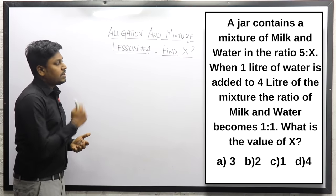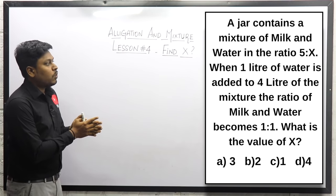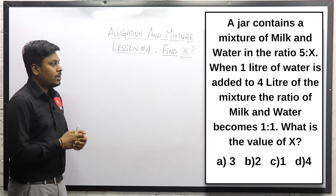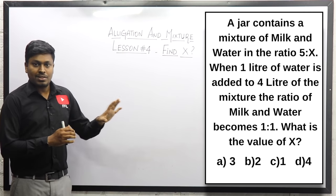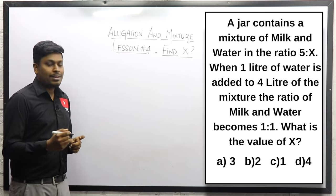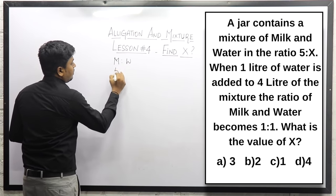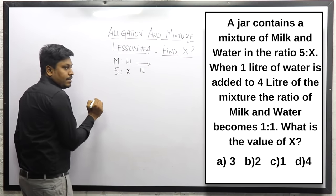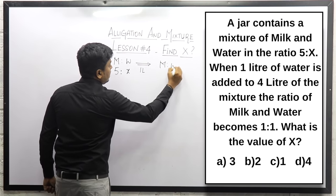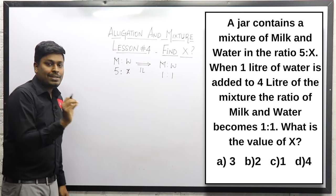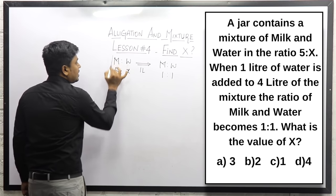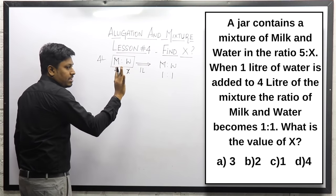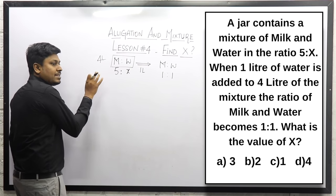Question number 2: A jar contains a mixture of milk and water in the ratio 5 is to x. When 1 liter of water is added to 4 liters of mixture, the ratio of milk and water becomes 1 is to 1. What is the value of x? The jar holds 4 liters total and 1 liter of water is added, making the final ratio 1 is to 1.